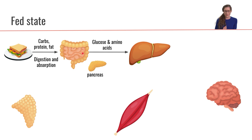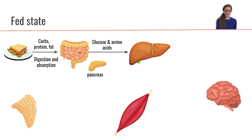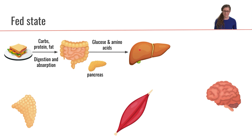The glucose and the amino acids from that meal are going to be absorbed from the small intestine and they're going to go straight to the liver, because the liver gets the first pass of nutrients.